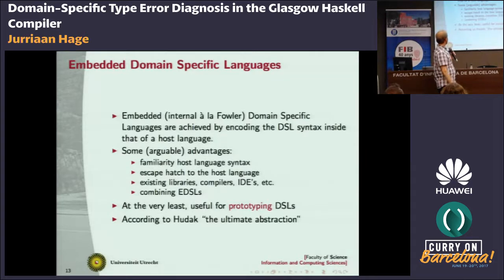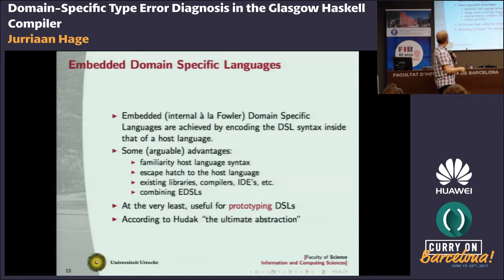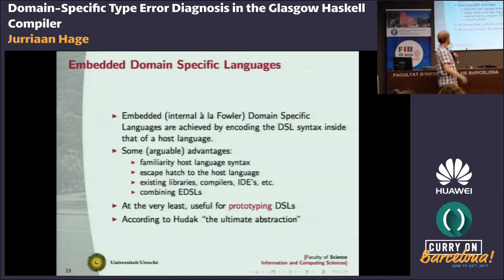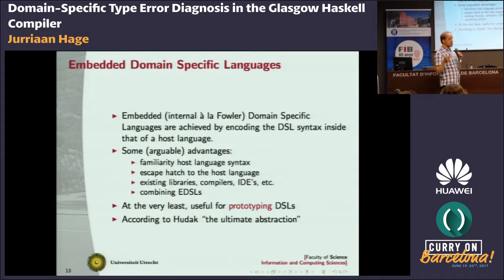Embedded domain-specific languages: you take a domain-specific language and implement it as a kind of library inside a suitably powerful programming language. This is something we can easily do in Haskell. There are lots of nice advantages: reuse of existing libraries, compilers, IDEs; you can easily combine EDSLs; and at the very least you can use it to prototype your domain-specific languages. Maybe later you build your own toolchain, but maybe this is good enough.